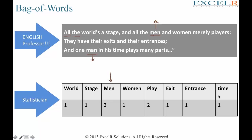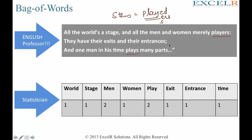For the word 'play' — if you look at this we have 'players' and we have 'plays'. For these two words the stem word is 'play'. What does that mean? If you have the word 'play' you can add a lot of extensions — add 'ed' and it becomes 'played', add 'ers' and it becomes 'players', add 's' and it becomes 'plays', so on and so forth. Exit is used once, entrance is used once, time is used once. And this kind of representation is called a bag of words representation.